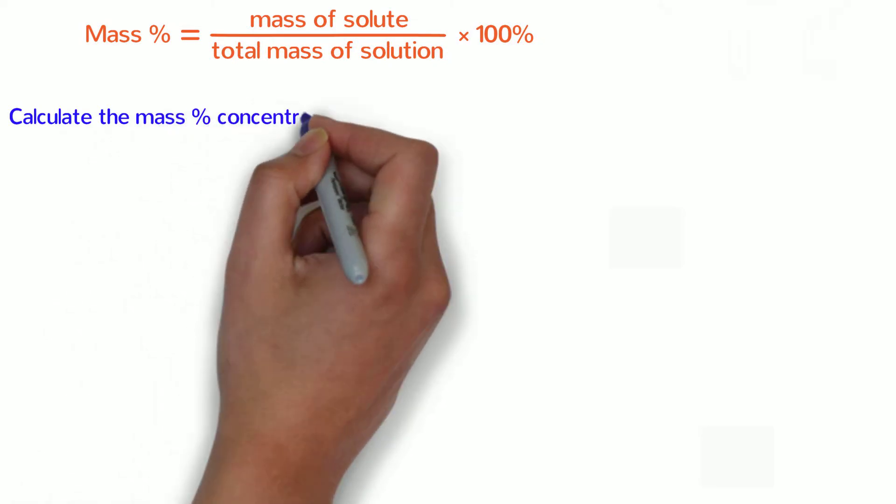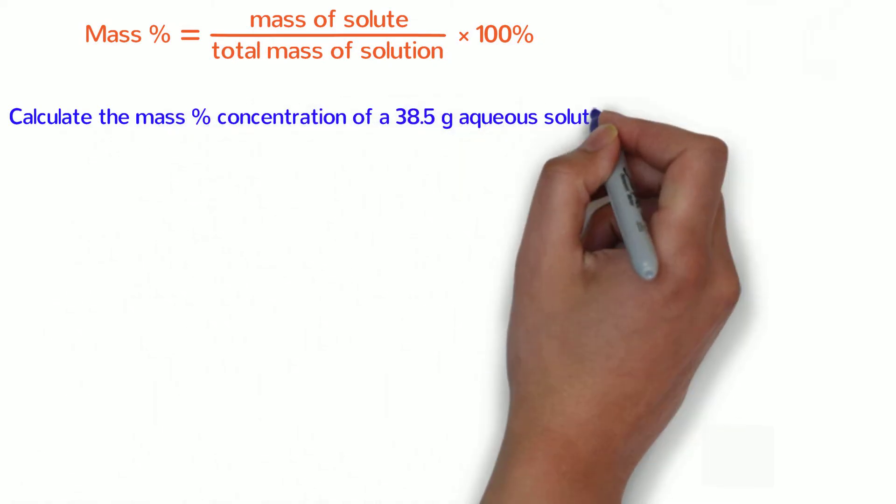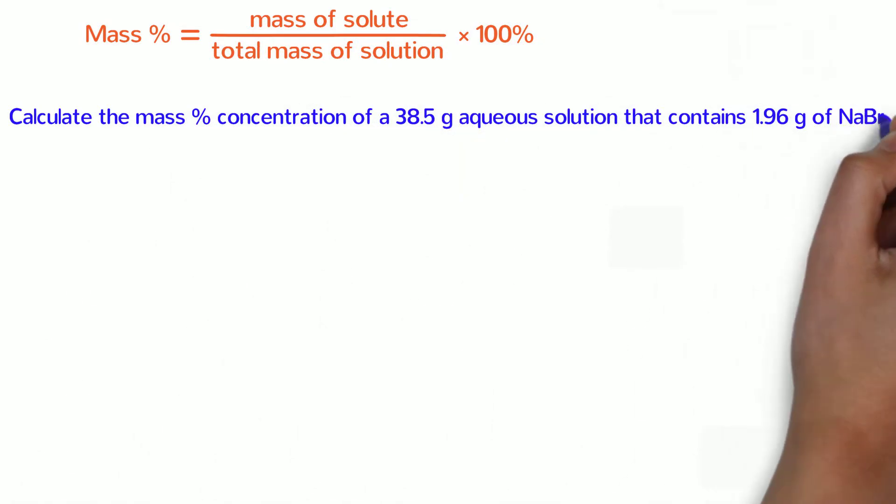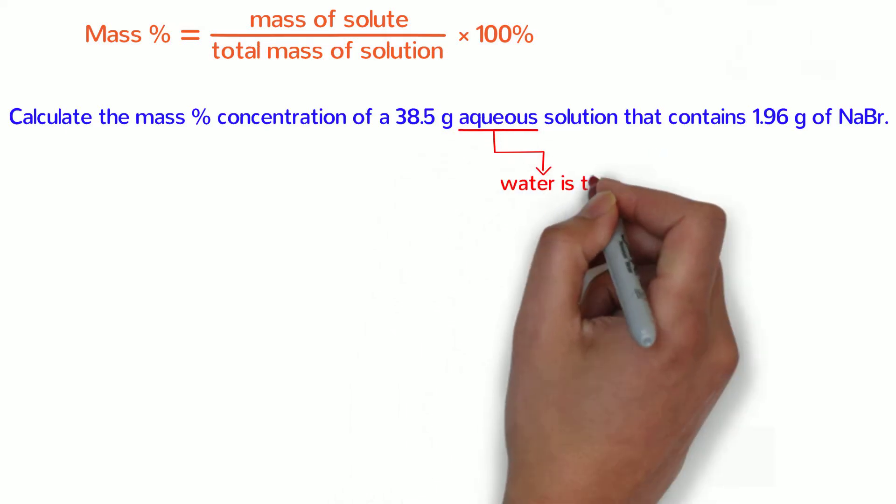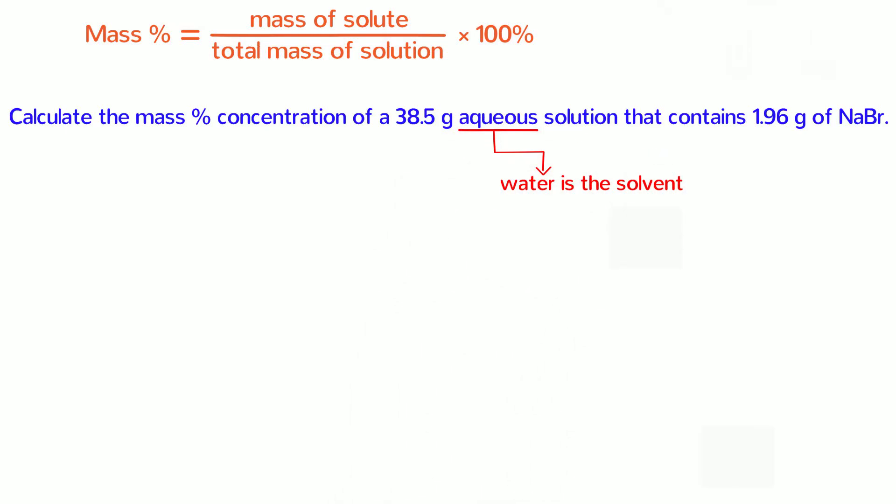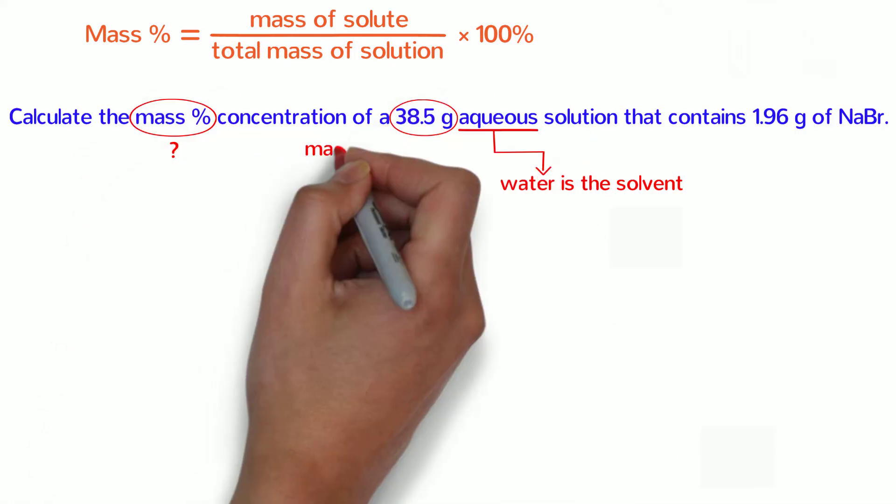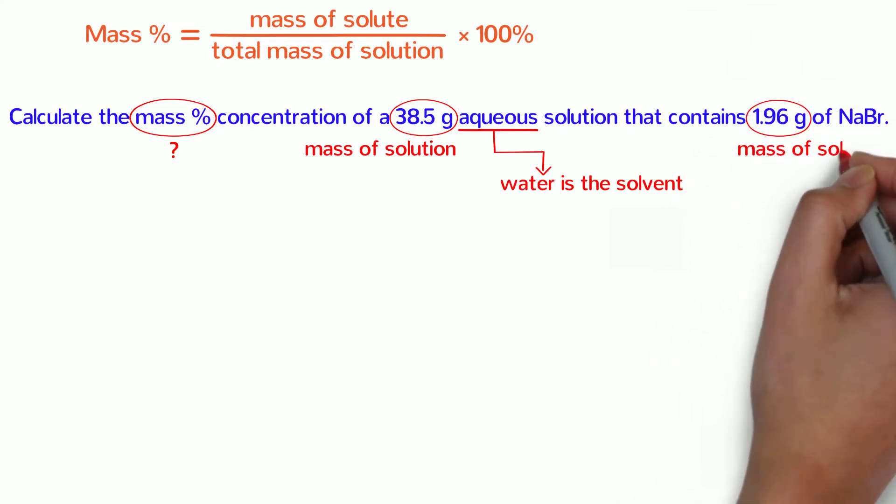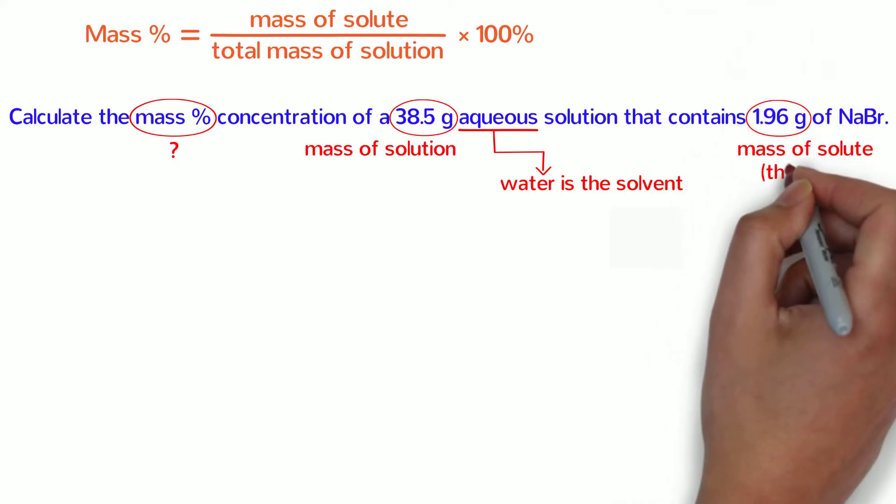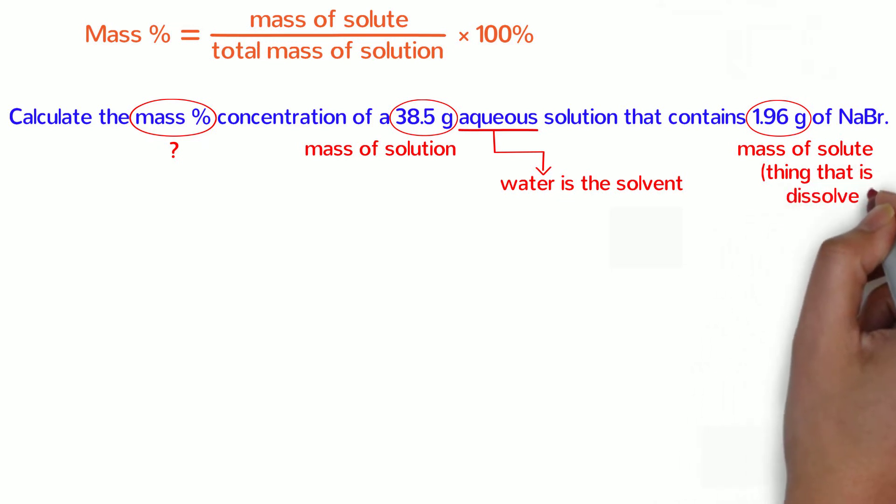Calculate the mass percent concentration of a 38.5 gram aqueous solution that contains 1.96 grams of sodium bromide. Before we solve this problem, let's make some sense of it. First, the term aqueous means that water is the solvent. Next, the problem tells us that we are solving for the mass percent. 38.5 grams is the mass of the solution and 1.96 grams is the mass of the solute. Remember that the solute is the thing that is dissolved in the solvent.